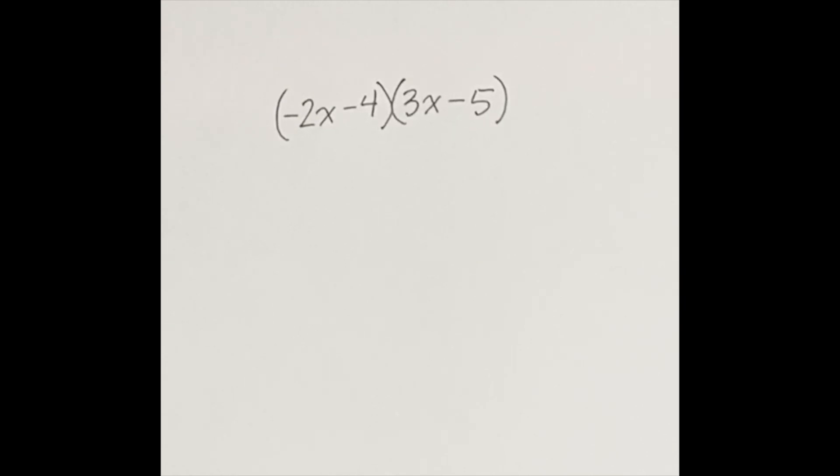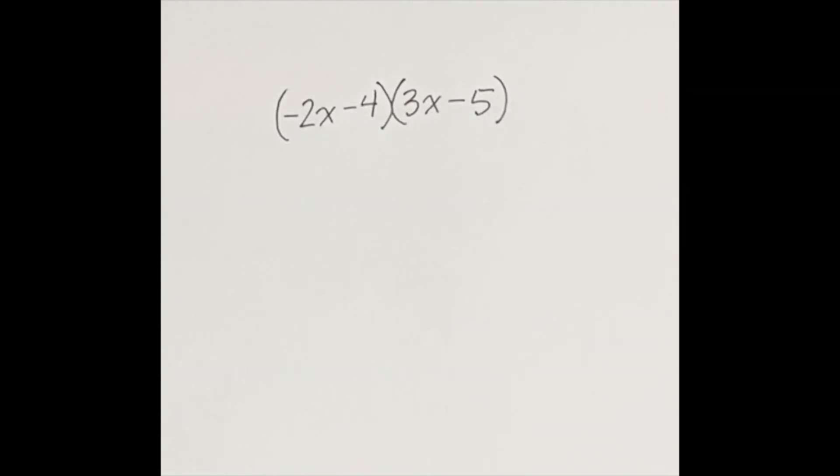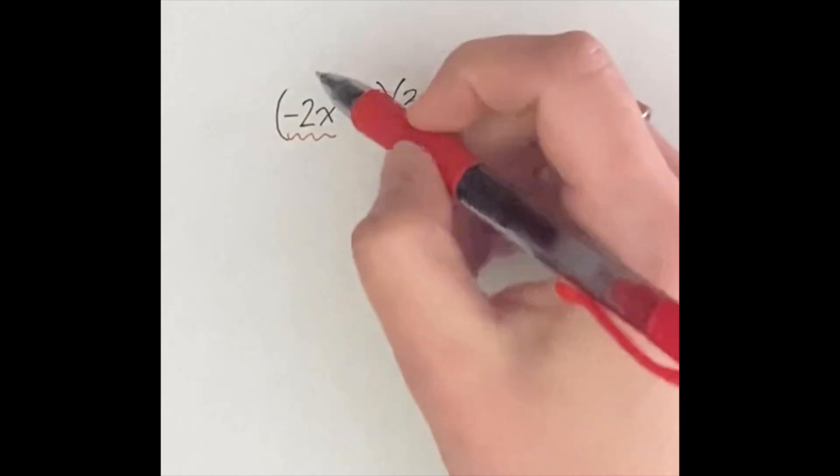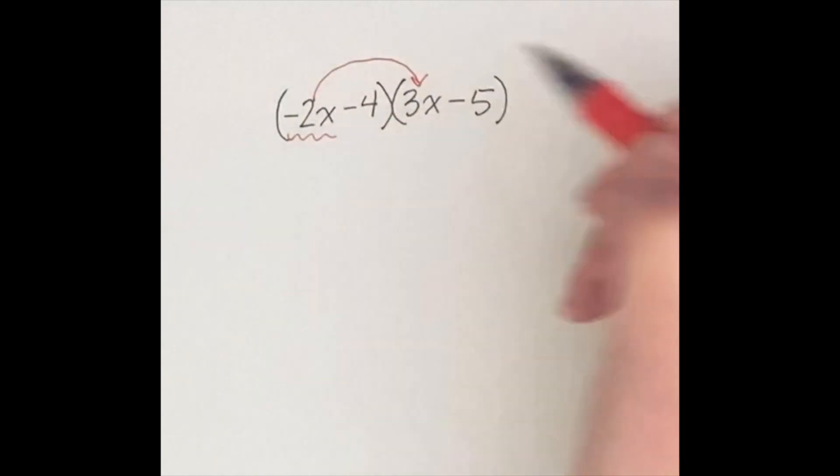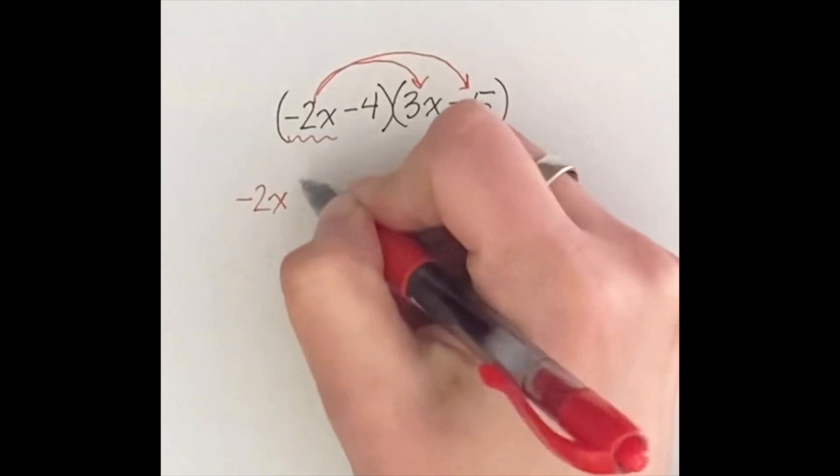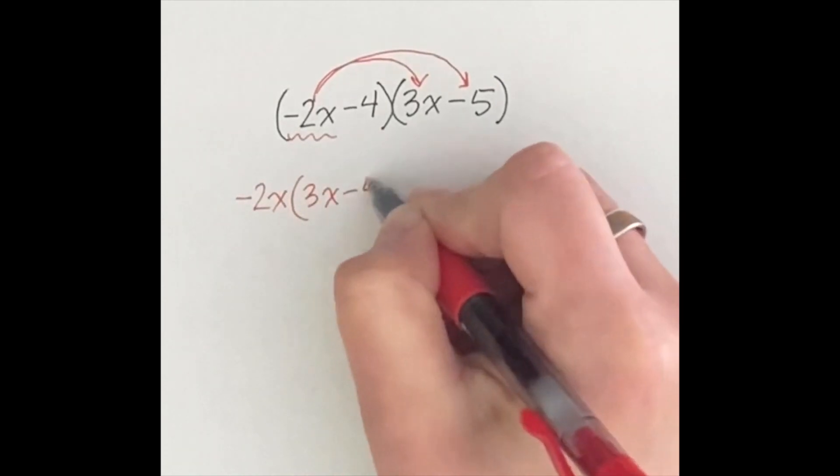Nice work, Mrs. Savage. For this binomial multiplied by a binomial, we're going to show double distribution again. So we've got this negative 2x that needs to be multiplied by the 3x and the negative 5. So 3x minus 5.